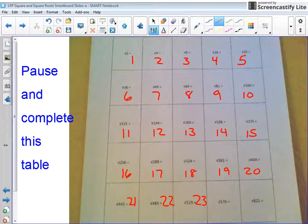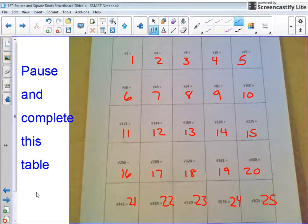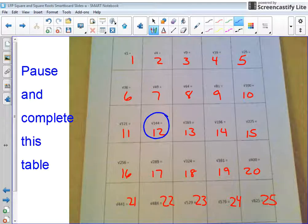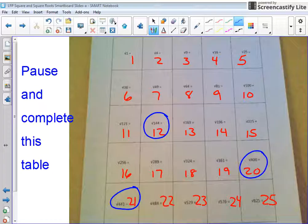Alright, welcome back. Now this table again will be a reference sheet and you might have noticed a pattern with the numbers. So if we just use this and we say the square root of 144, that is equal to 12, or the square root of 400 is equal to 20, or the square root of 441 is equal to 21.